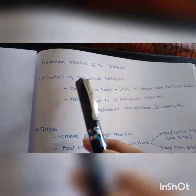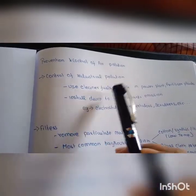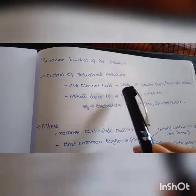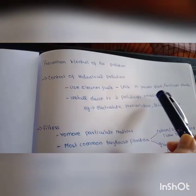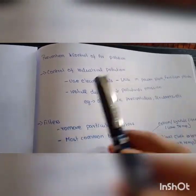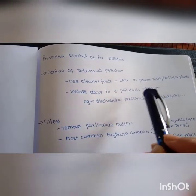Prevention and control of air pollution, particularly industrial air pollution. First, cleaner fuels use, like liquefied natural gas in power plants or fertilizer plants. Then, pollutants emissions are reduced.